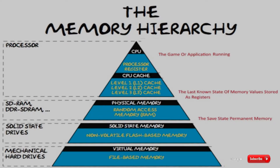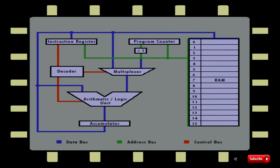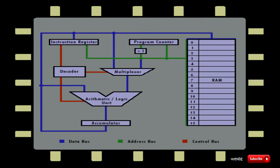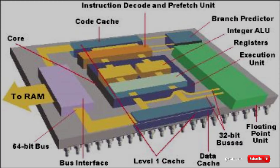Almost all computers, whether load/store architecture or not, load data from a larger memory into registers where it is used for arithmetic operations and is manipulated or tested by machine instructions. This means your game scores, points, and running time are stored as a value in a memory region as a register.